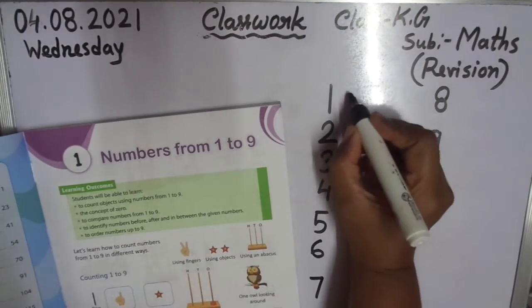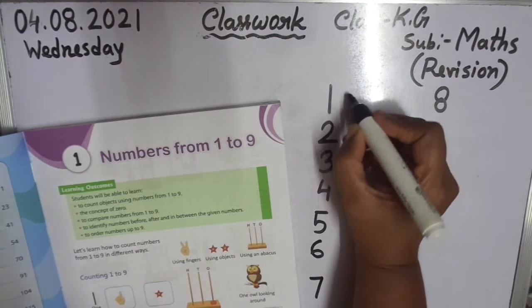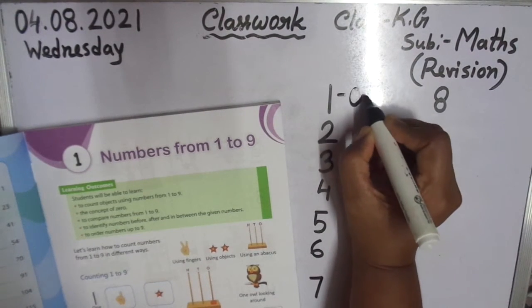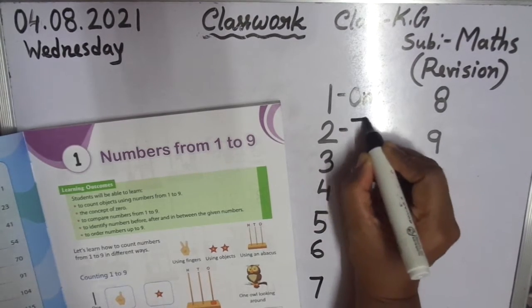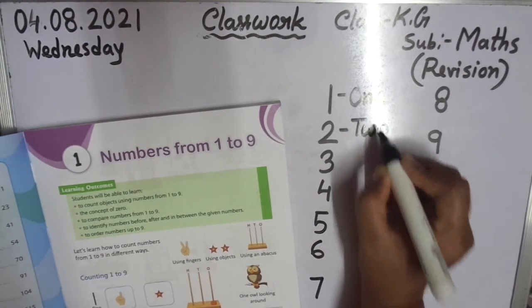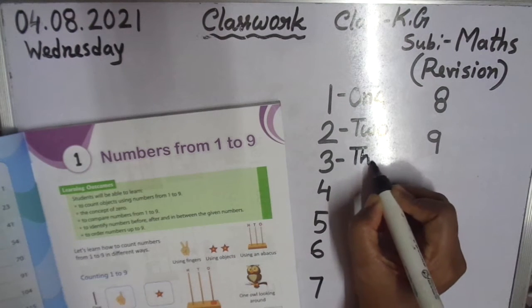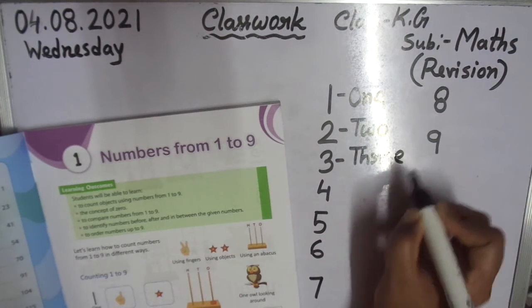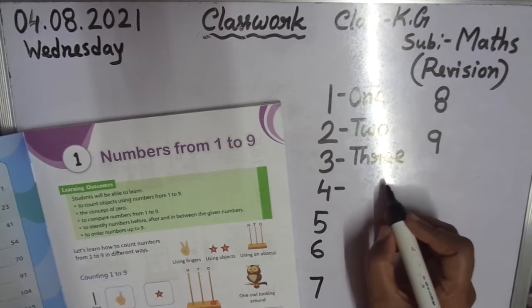So numbers — number name. O, N, E: 1. T, W, O: 2. T, H, R, E, E: 3. Number names are very important.